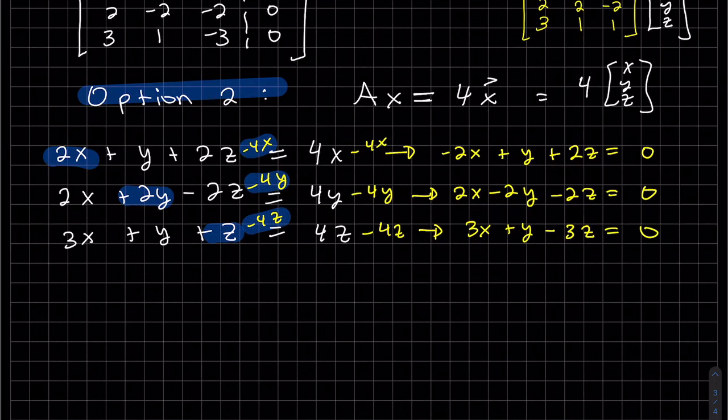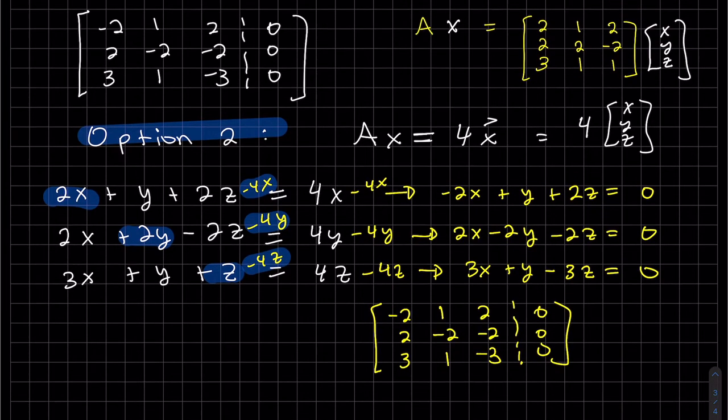And so now we can write this as an augmented matrix, our A being these coefficients—the new A, basically. And this new augmented matrix should be the same as the one we found before, and it is. So now we can finish solving this. Again, you can do it either way. Obviously, I think the first way was easier, but this explains it.